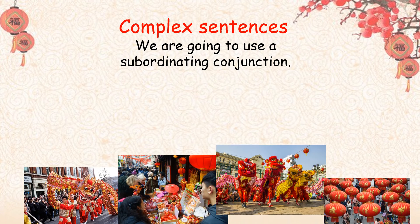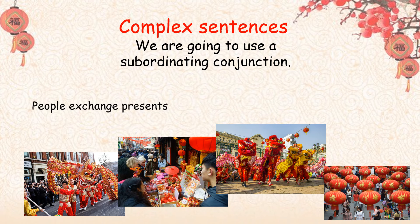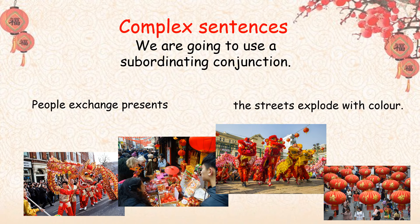So I'm going to have a go at writing my own — I've got my pictures again to help me. People exchange presents. Perfectly good clause, but it's a little bit boring. The streets explode with colour — like I've said, they don't actually explode, but it's a bit of personification, or a metaphor even. Now I'm going to add a subordinating conjunction to make it more interesting, and I've chosen 'while.' So: people exchange presents while the streets explode with colour.